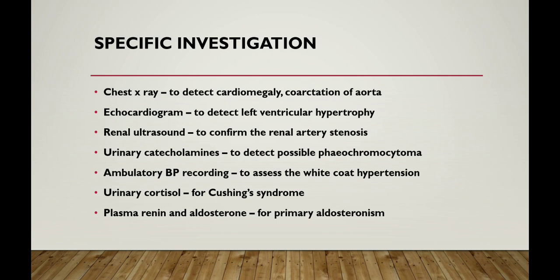Coming to management of hypertension. The management can be divided into investigations and treatment. Specific investigations include ECG, chest X-ray to detect cardiomegaly and coarctation, echocardiogram to detect left ventricular hypertrophy, renal ultrasound to detect renal artery stenosis, urinary catecholamines to detect possible phaeochromocytoma, ambulatory BP recording to assess white coat hypertension, urinary cortisol for Cushing's syndrome, and plasma renin and aldosterone for primary aldosteronism.